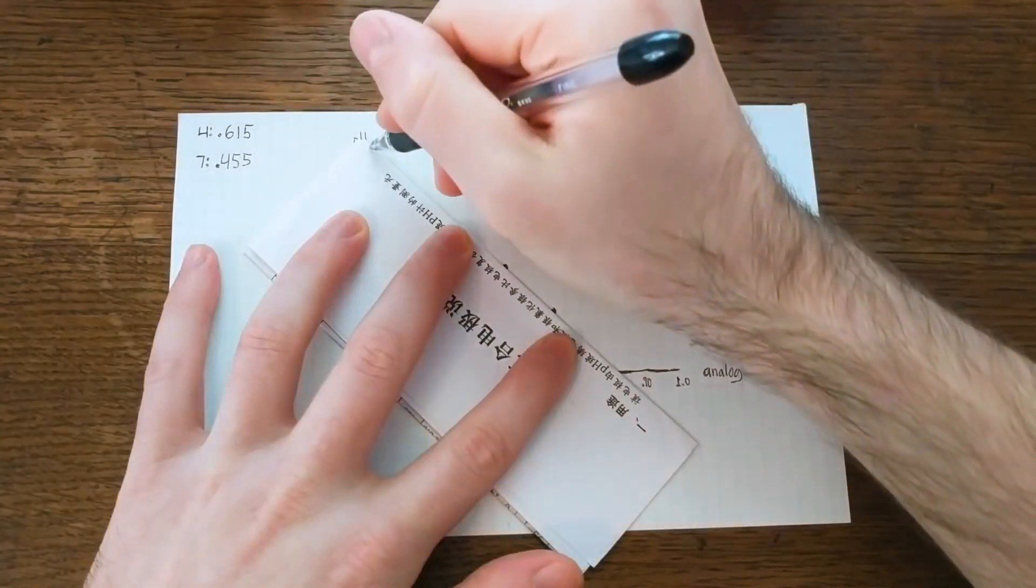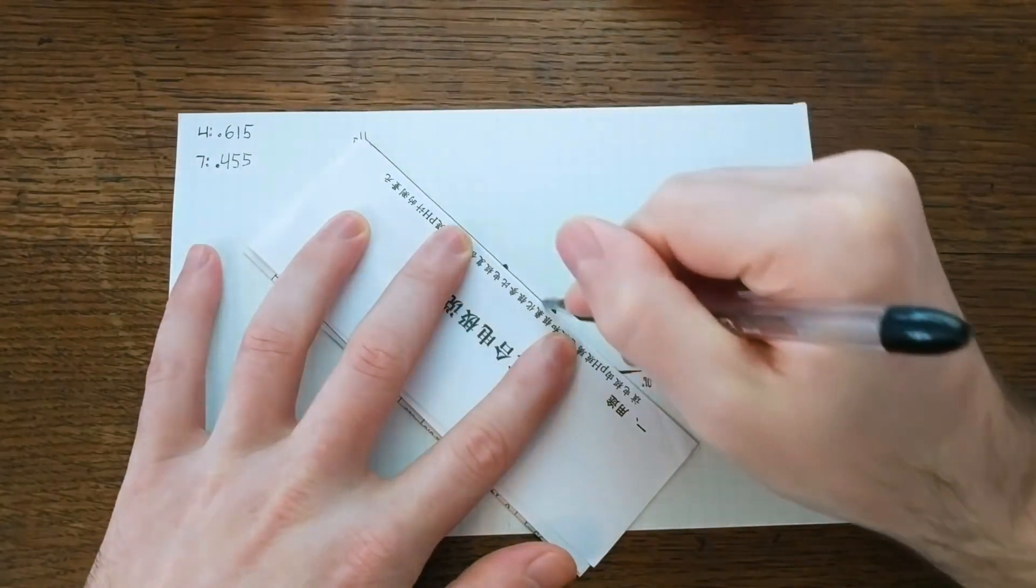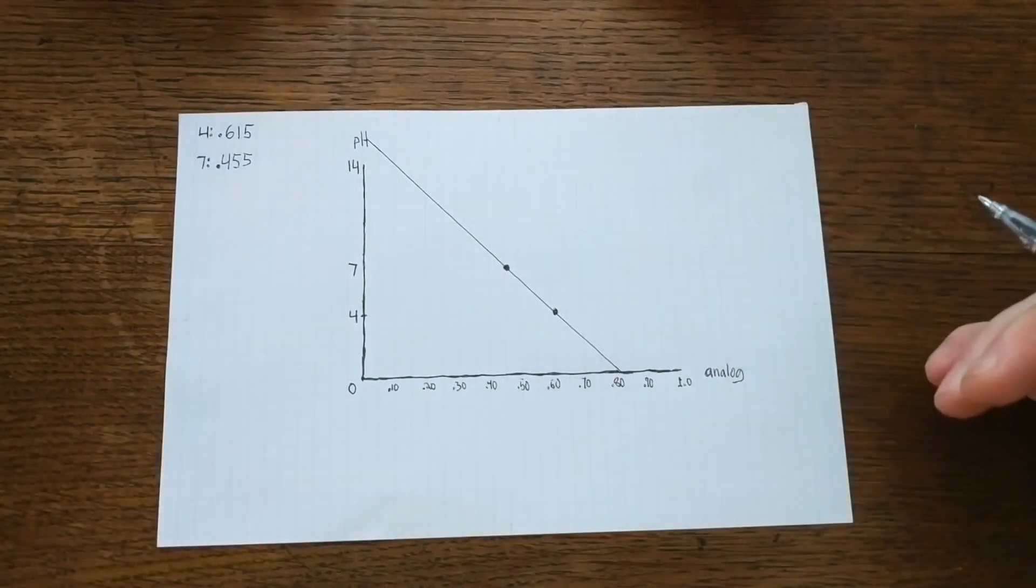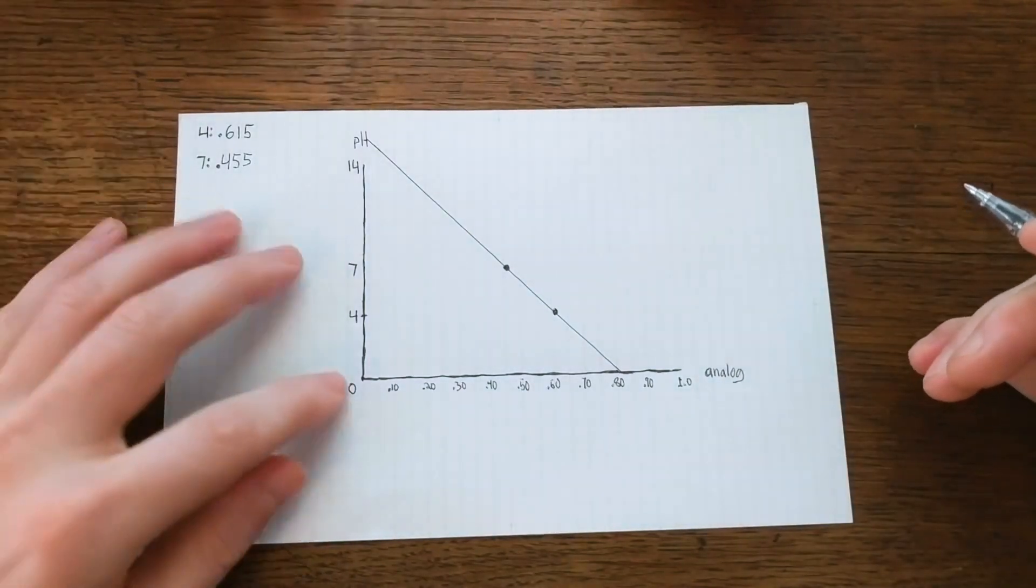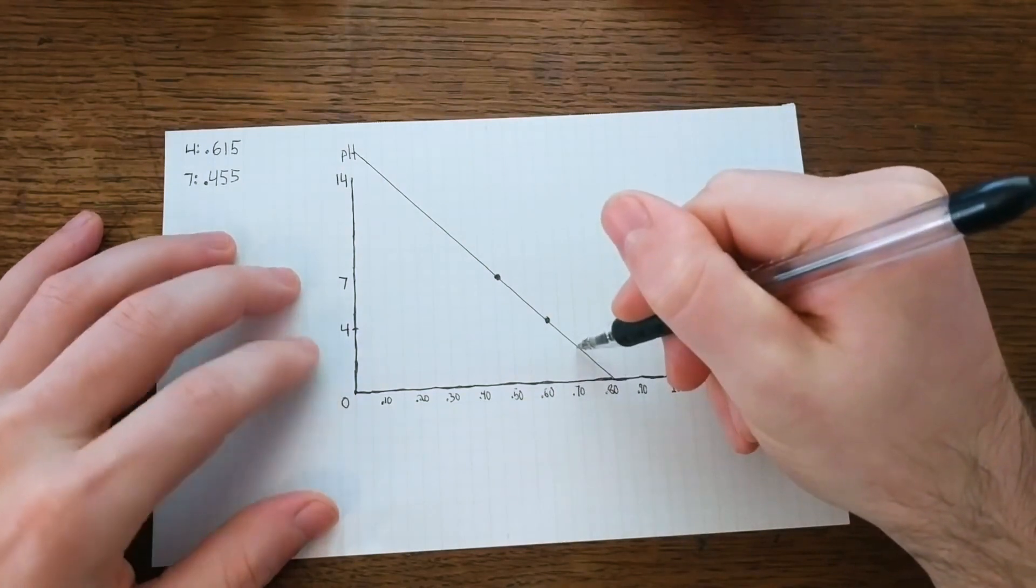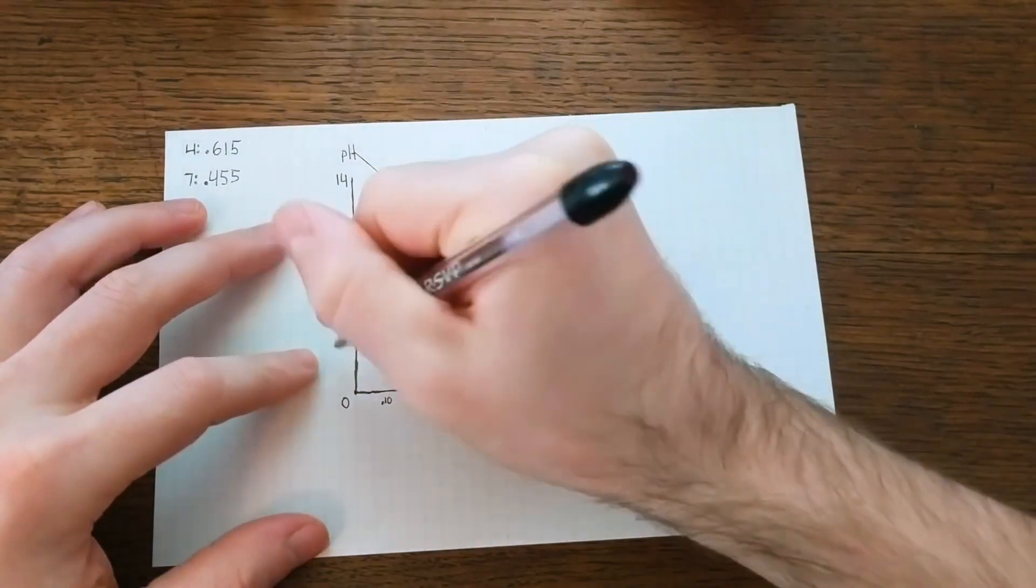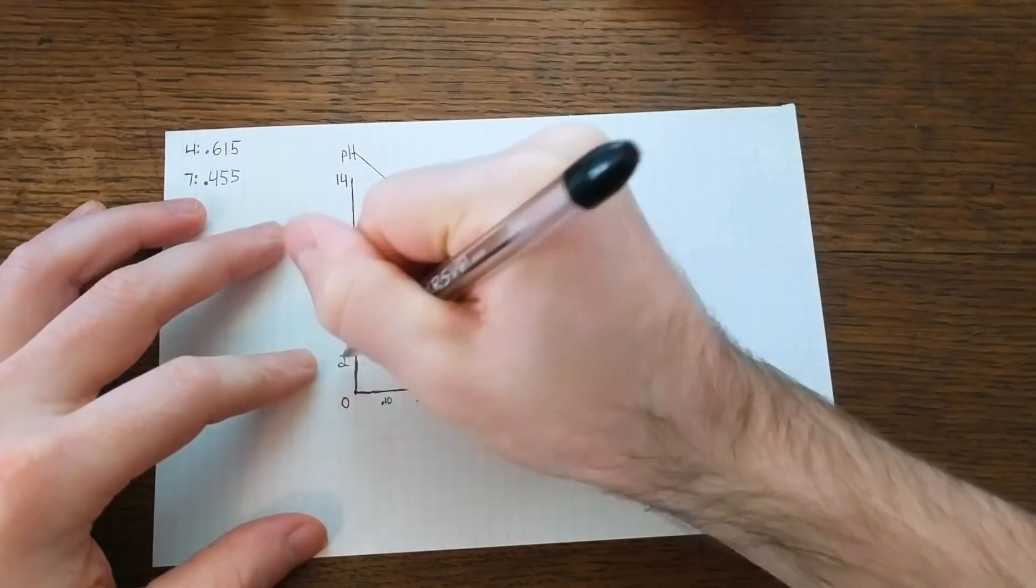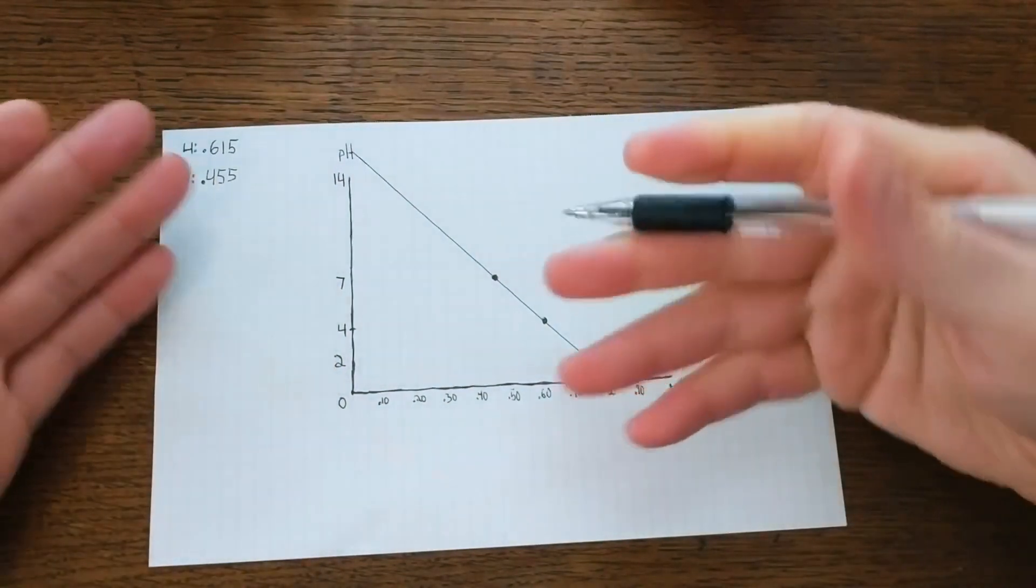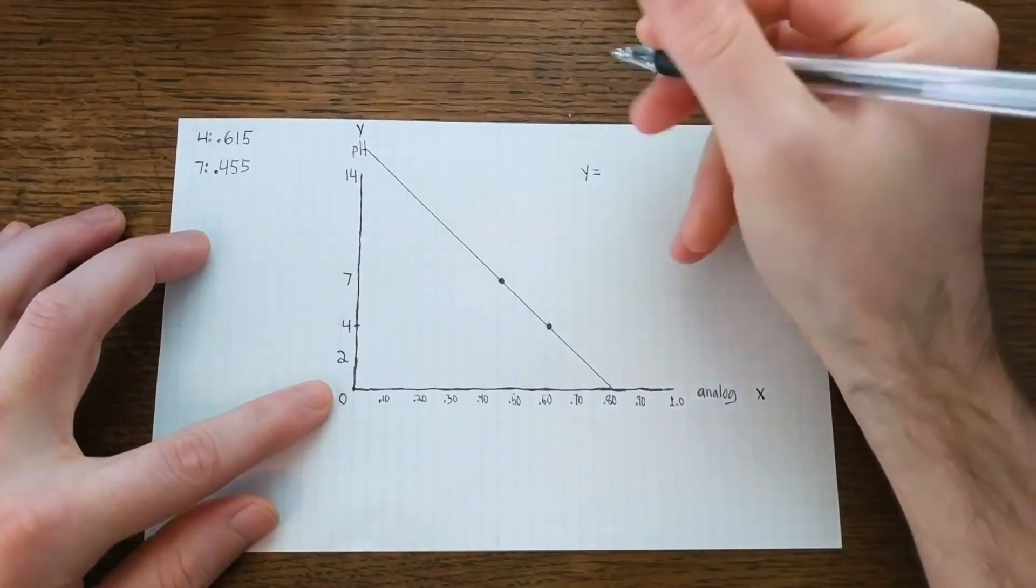The function we're deriving will be a linear function, so I'll just draw an approximate line between these two points. Now in theory, this line gives us everything we need to calculate the pH from an analog reading. So if we have an analog reading of 0.7, it should be approximately a pH of 2. Pretty simple, right? But we'd like our microcontroller to be able to do this calculation for us, since it's not very practical to carry around graph paper and do this lookup every time we want to make a measurement.